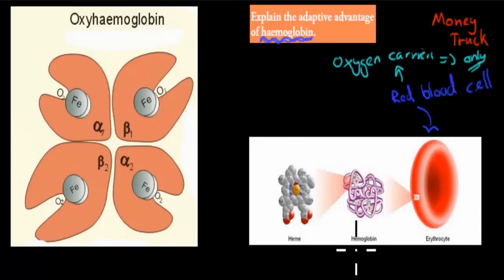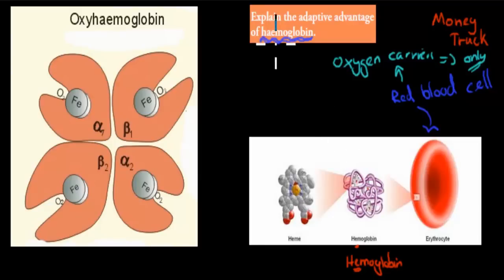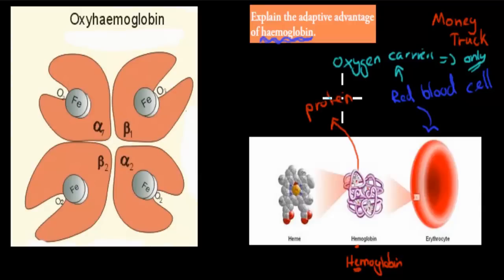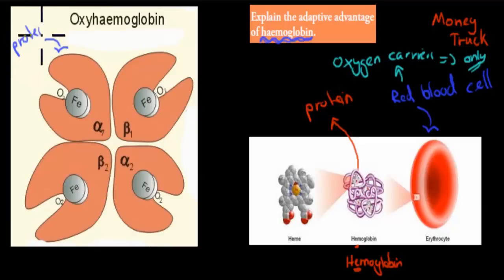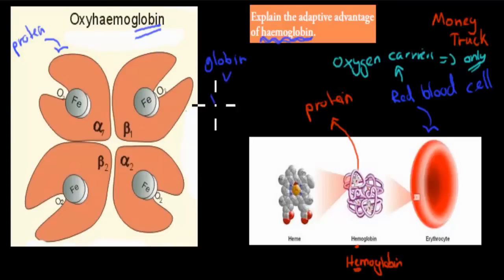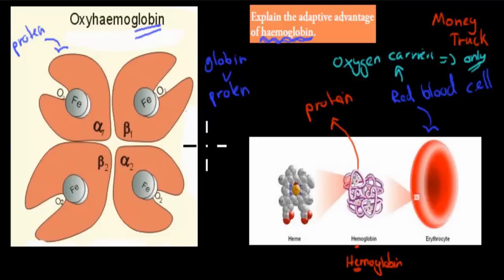You'll notice it's spelled with an E here — that's the American spelling. Us Australians and British spell it with A-E instead of just E. It's the same thing. What is hemoglobin? It's a protein. Looking at the protein structure, these pink parts are polypeptide chains — those are the protein parts. Looking at the word hemoglobin, the 'globin' part refers to the protein — the whole pinkish part is the globin.